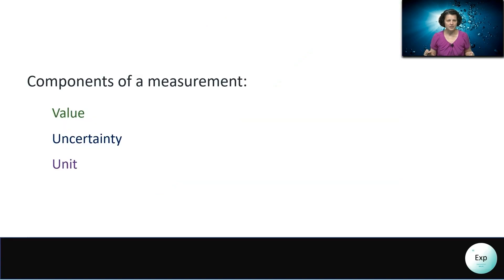A measurement always has three components: a value, something that we know for sure; an uncertainty, something that we guess; and a unit, which is typically labeled on the instrument.